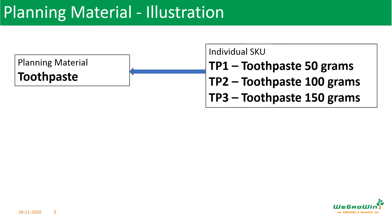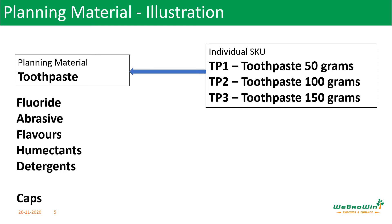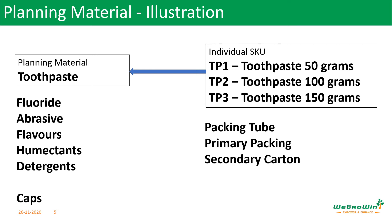For the toothpaste planning material, we will create a planning BOM containing all the raw materials such as fluorides, abrasives, flavors, humectants, detergents, and caps. At the same time, we will have a production BOM for TP1, TP2, and TP3 containing the packing tube, primary packing, and secondary cartons. Using the planning material and planning BOM, as discussed in session 22, we plan all the raw materials in advance. When we receive actual orders for TP1, TP2, and TP3, the packing materials will also be planned.